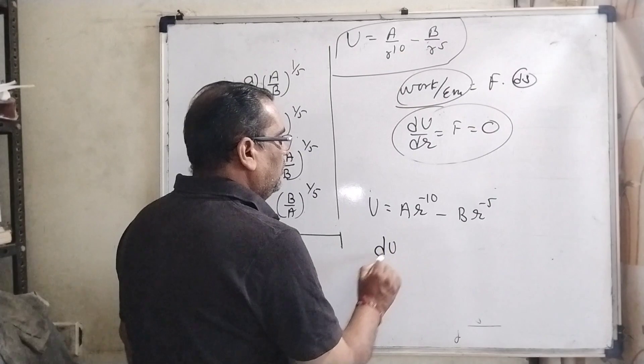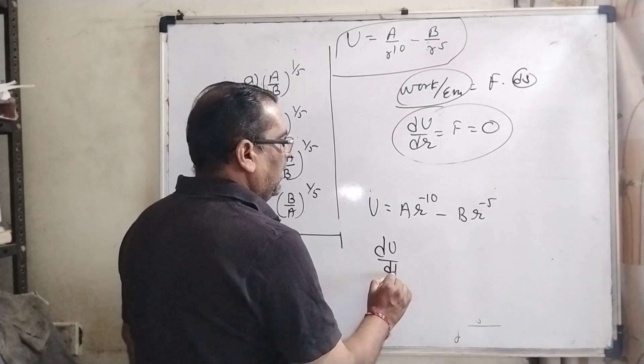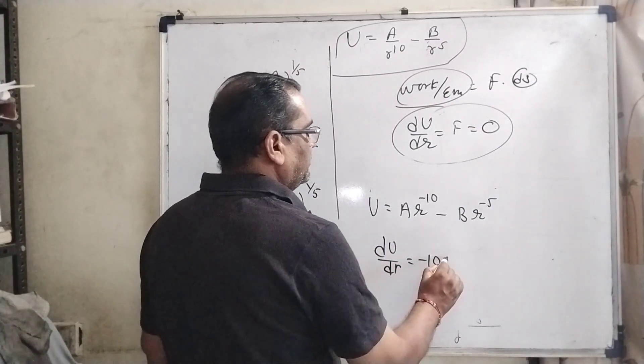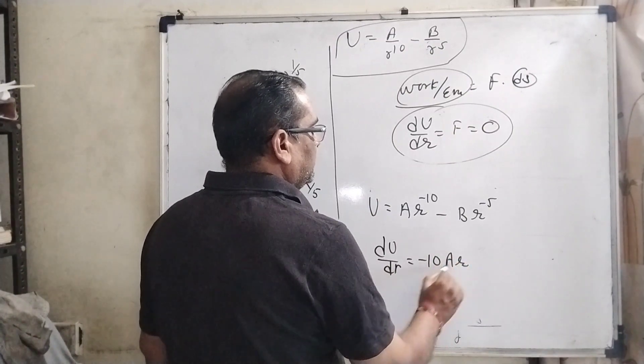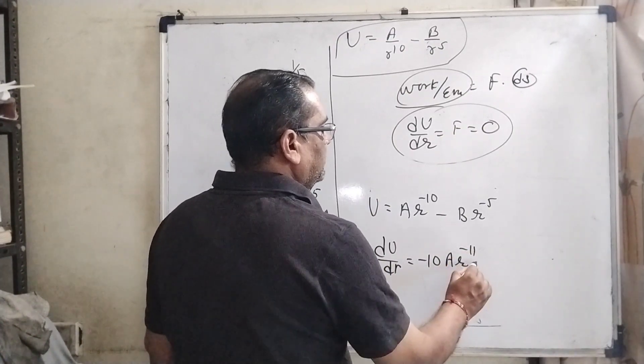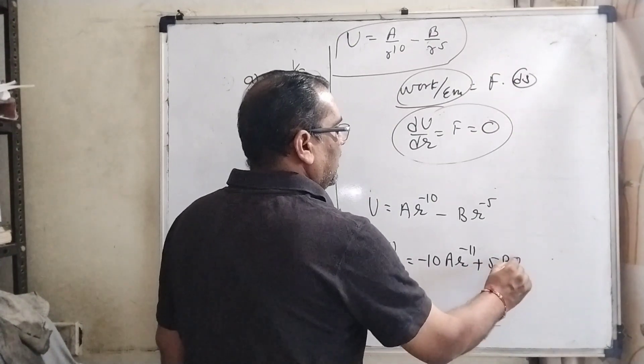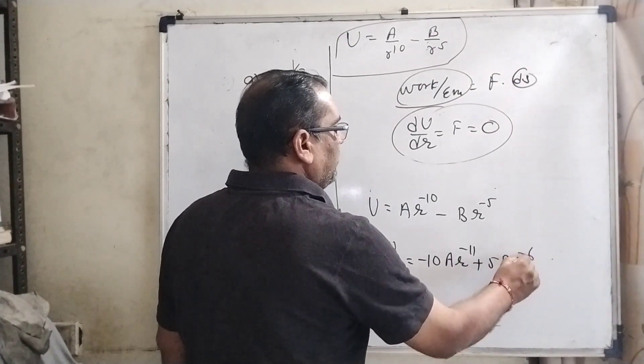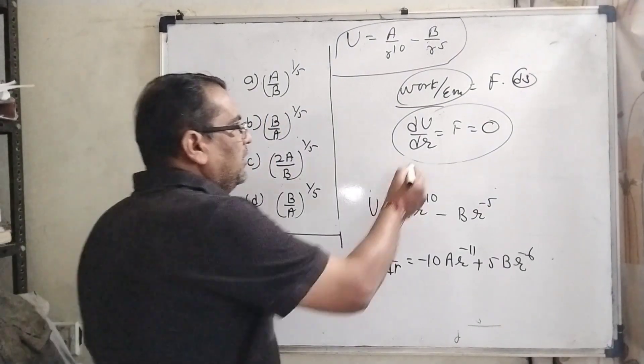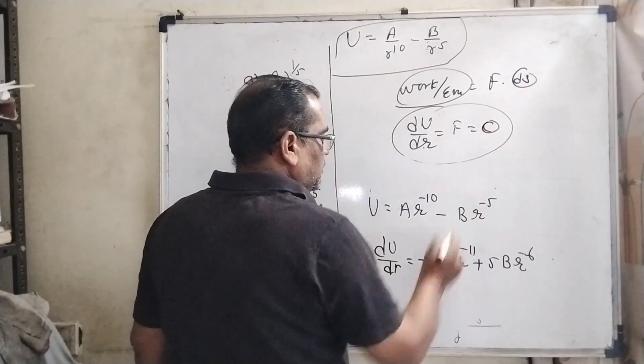Then dU by dr can be written as minus 10 A r minus 11 minus minus plus 5 B r raised to power minus 6. Clearly dU by dr is equal to 0.